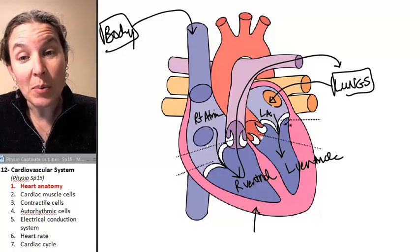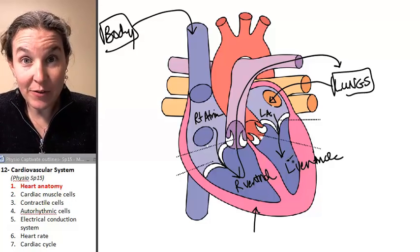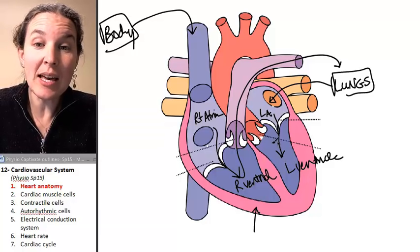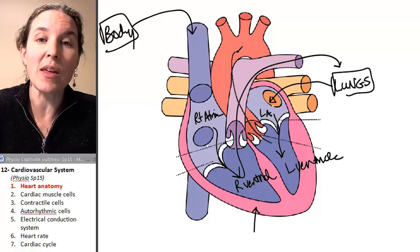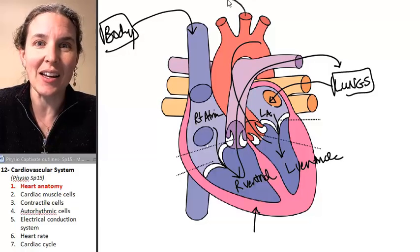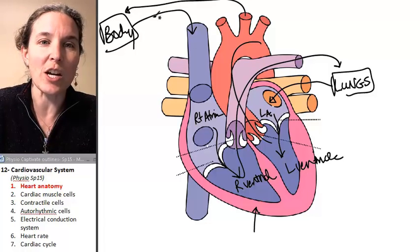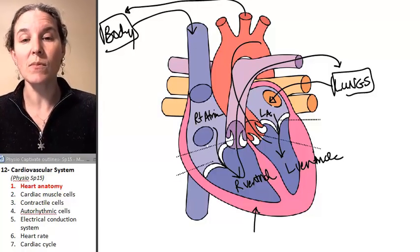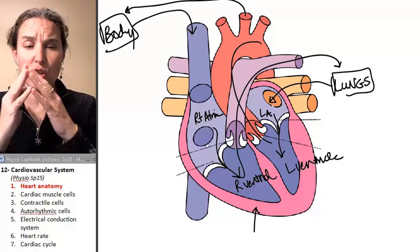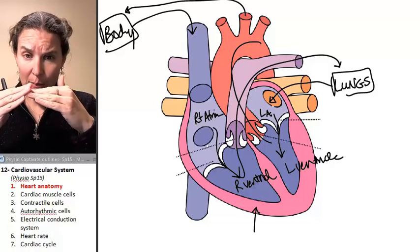The fresh oxygenated blood that is now in the left ventricle that came from the lungs, that blood is going to go out through the aorta, and it's going to go back to the body, except this time it's fresh and oxygenated.